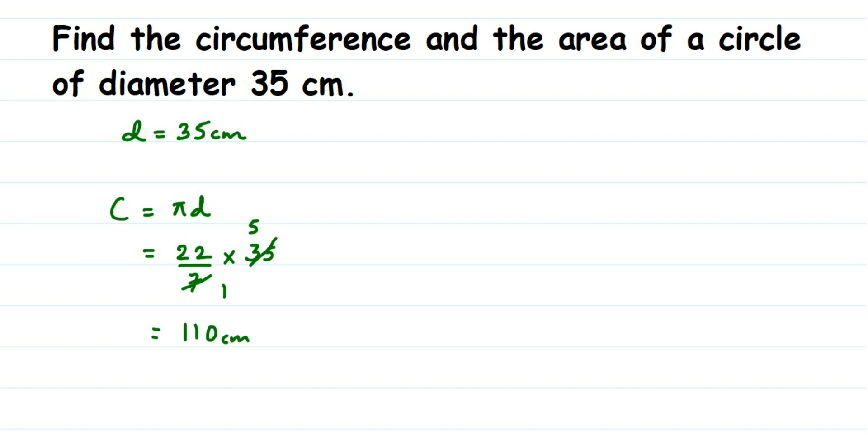Now we're going to find out the area. So area of circle is πr². Here diameter is 35, so radius we know is half of diameter, that is d/2, which is 35/2.